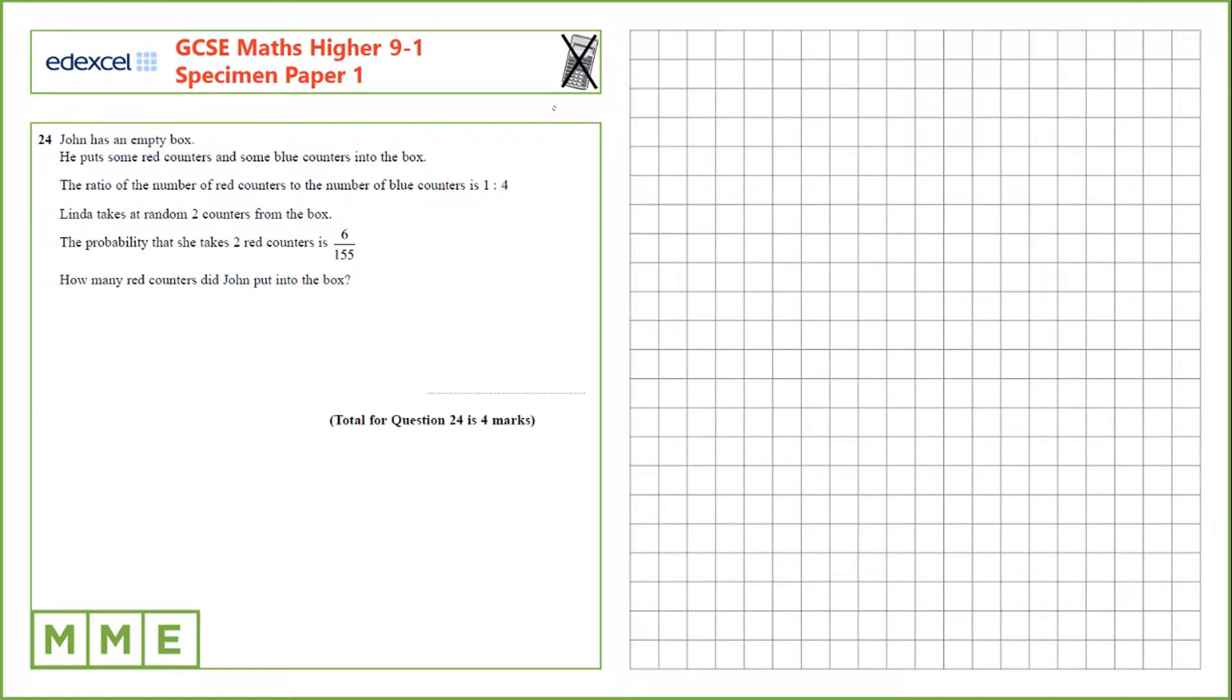Question 24. John has an empty box. He puts some red counters and some blue counters into the box. The ratio of the number of red counters to the number of blue counters is 1 to 4.